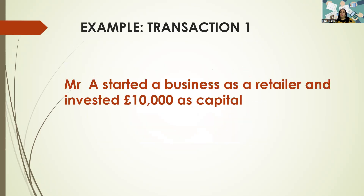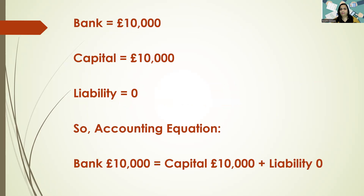I've got a small example. Transaction number one: Mr. A started a business as a retailer and invested £10,000 as capital. When you start a business and invest your capital, the other side of the accounting equation — liabilities plus capital — your capital goes up by £10,000. You are investing cash, so your assets, which is cash or bank, will also go up by £10,000. So bank is £10,000, capital is £10,000, liability is zero. Assets equal capital plus liability — everything balances perfectly.